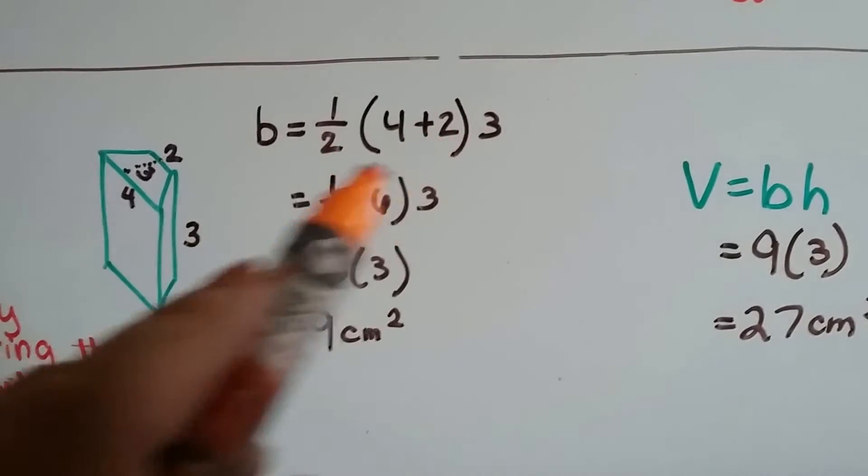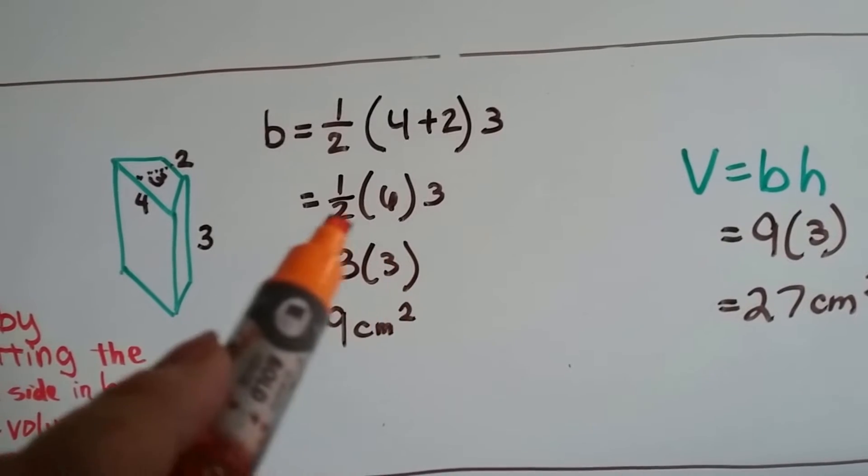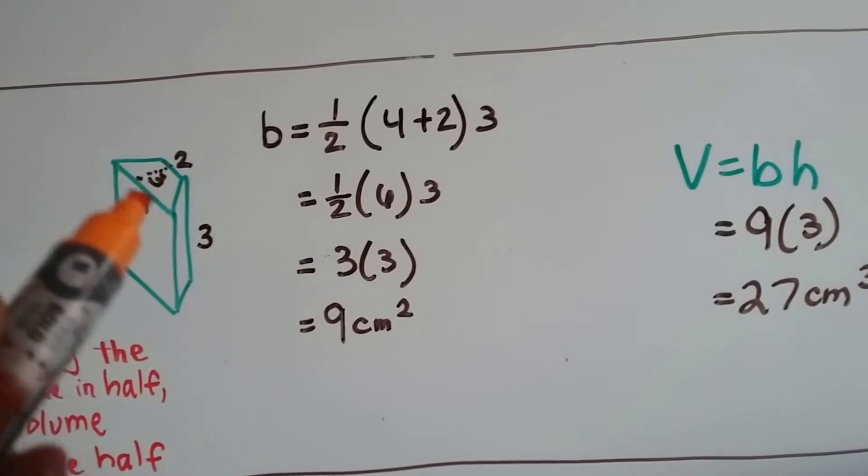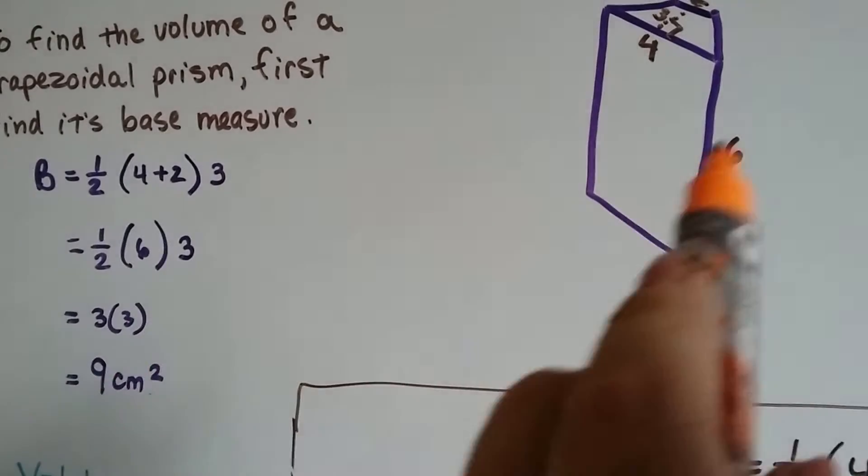We still have our 4 plus 2, the two bases, times 3. So we get 3 times 3, and that's 9 centimeters squared. Well that's what we had last time, remember? When we were doing it when it was a 6.